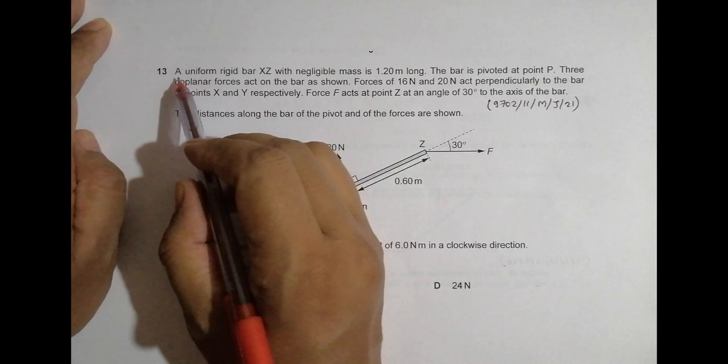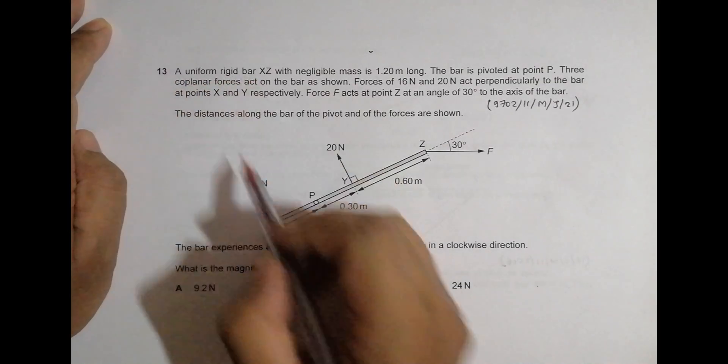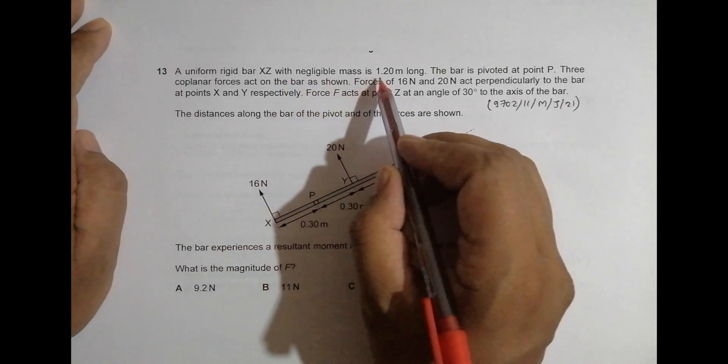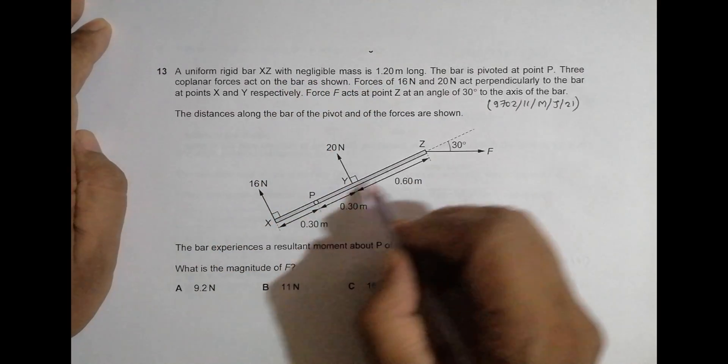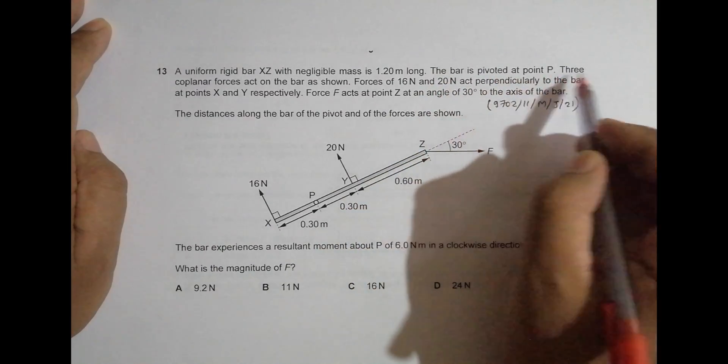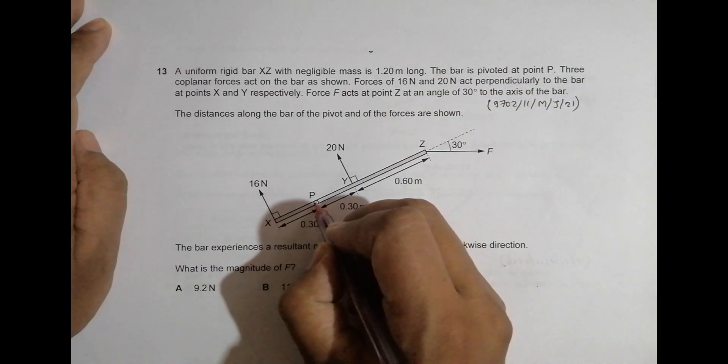It says that a uniform rigid bar XY, rigid means that it doesn't bend when force is applied, with negligible mass is 1.2 meters long, so its whole length is 1.2 meters. The bar is pivoted at point P. So let me highlight it by using this red color.